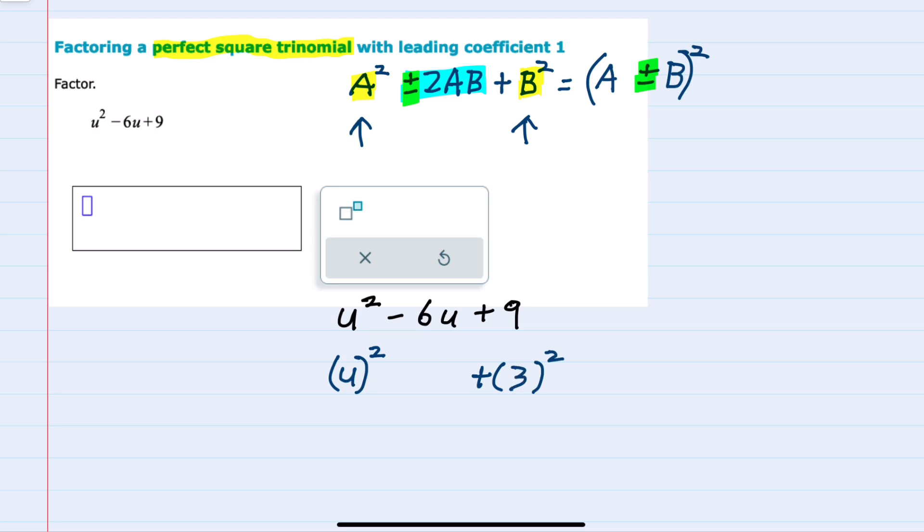And then in the middle, this minus 6u, can I write that as minus two times the product of these two? So two times, I've got a numerical three in the variable u. Yes, we can see that this trinomial is a perfect square trinomial. So that means that we'll be able to